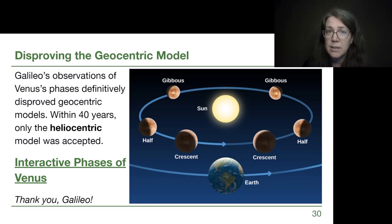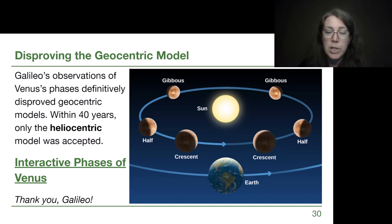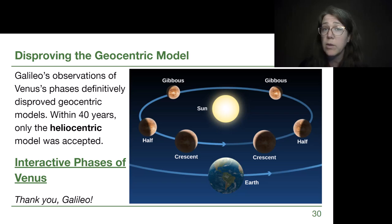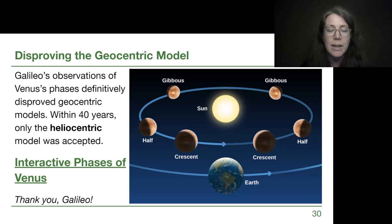Galileo did not have an easy time with this groundbreaking, belief-changing model. He was put under house arrest for publishing without going through the correct censorship process and was told he could not publish anything about the solar system for the rest of his days. While under house arrest he wrote up many other physics experiments, and we're very thankful to have those findings. It took until 1992 for the Vatican to formally acknowledge they were wrong to punish him for publishing facts about the solar system. Thank you, Galileo.